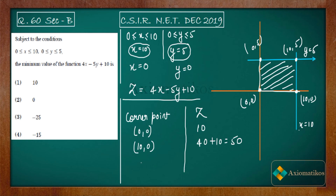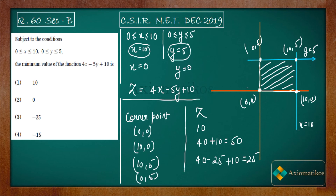Substituting (10, 5) gives 40 minus 25 plus 10, which equals 25. For the last point (0, 5), the x-terms become 0, so you get minus 15 as your answer. On the corner points, z attains the values 10, 50, 25, and minus 15.